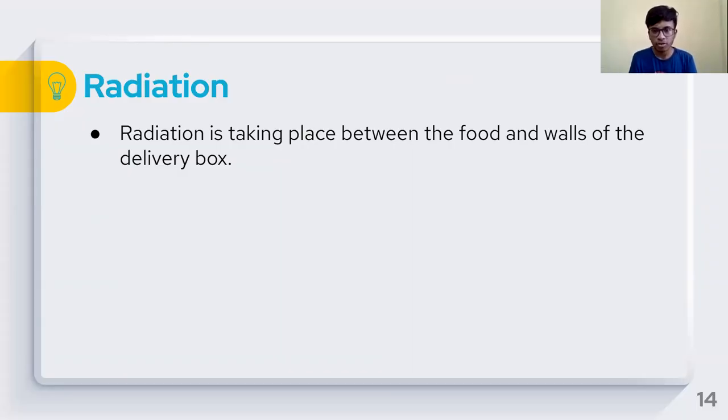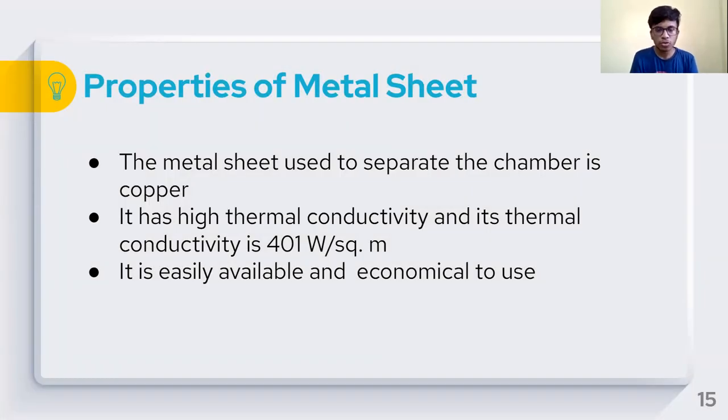Radiation is the emission or transmission of energy in the form of waves or particles through space or through a material medium. In this case, the pizza or food box is radiating heat to the walls of the delivery box. The dominant mode of heat transfer is conduction as heat is transferred to the food box by the hot exhaust gases whose temperature is very high through conduction through the copper plate. The sheet used to separate the gas chamber should have high thermal conductivity so that maximum heat could be conducted to the food box. We have used copper since it has the highest thermal conductivity of 401 watts per square meter and is economically feasible.